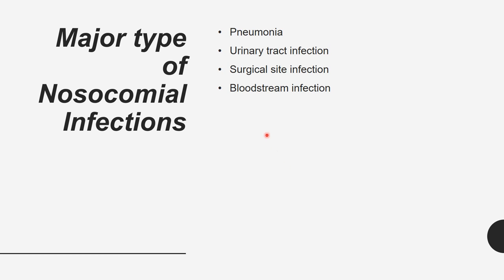The major types of nosocomial infections are: 1st — pneumonia; 2nd — urinary tract infection; 3rd — surgical site infection; 4th — bloodstream infection.